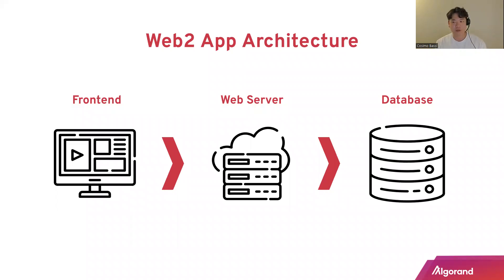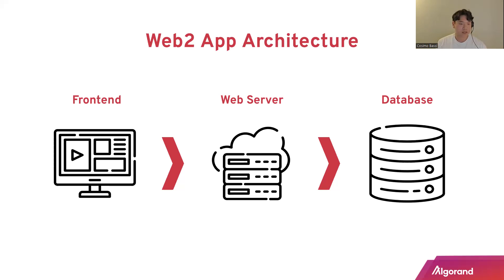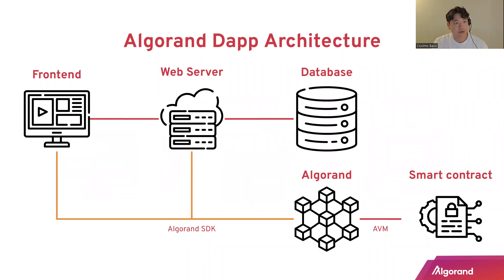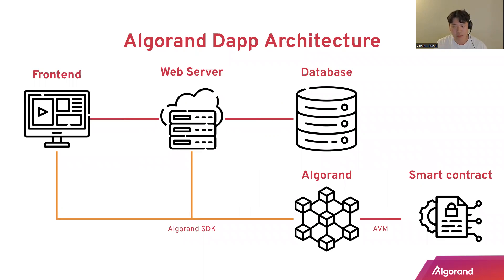This is a typical Web2 app architecture: we have the front end where users interact with the application, the web server that handles all API calls and interaction between the front end and the database, and the database that stores all the relevant data. A typical Algorand dApp architecture has those same three components, but we add the Algorand blockchain — and on it, we deploy a smart contract, which is a logic program that defines when to do certain things when interacting with the Algorand blockchain.